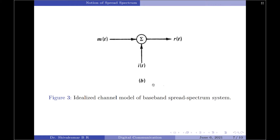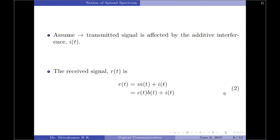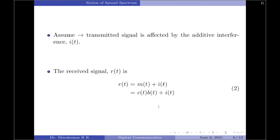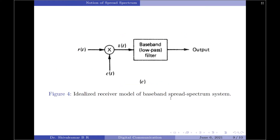Let us look at the channel model for the baseband system. We assume the channel is affected by an interfering signal, so the received signal r(t) is the sum of the transmitted signal m(t) plus the interfering signal i(t): r(t) = m(t) + i(t), given in equation 2. Substituting equation 1 — where m(t) = c(t) × b(t) — into equation 2, the received signal can also be written as r(t) = c(t) × b(t) + i(t).